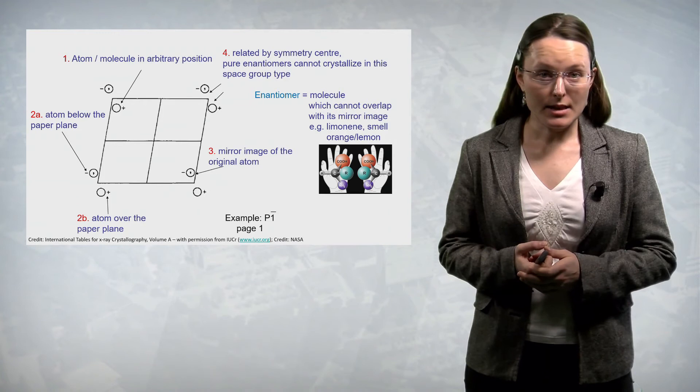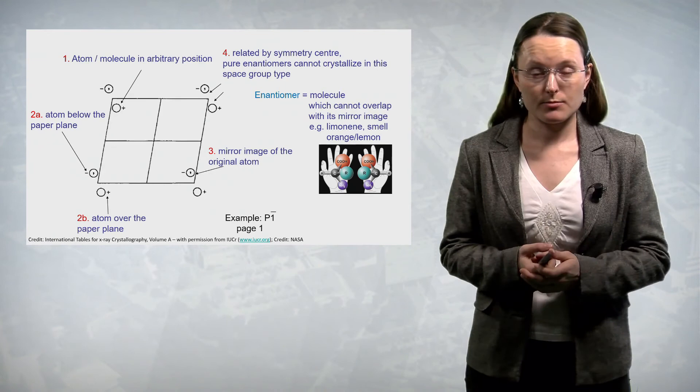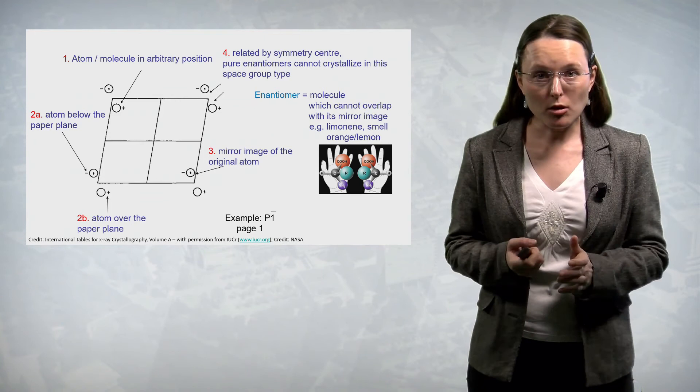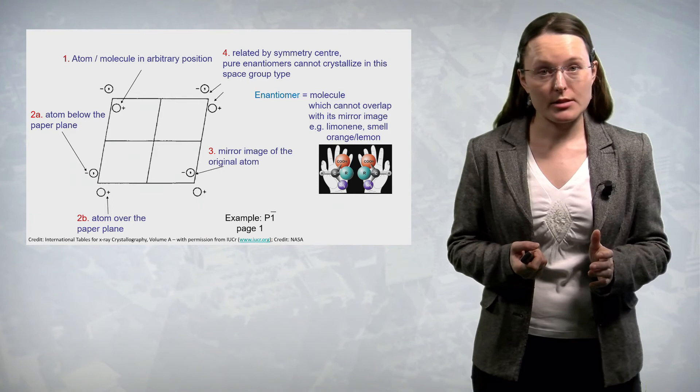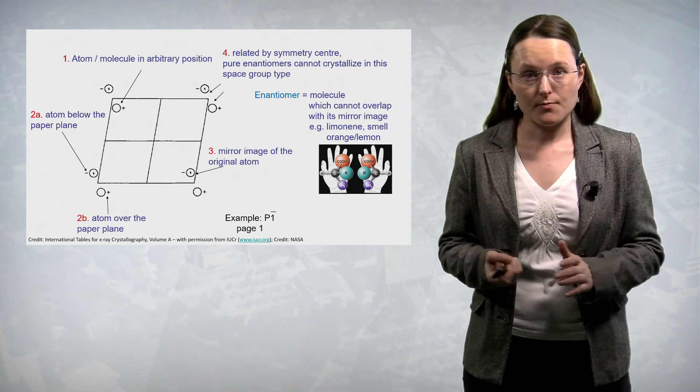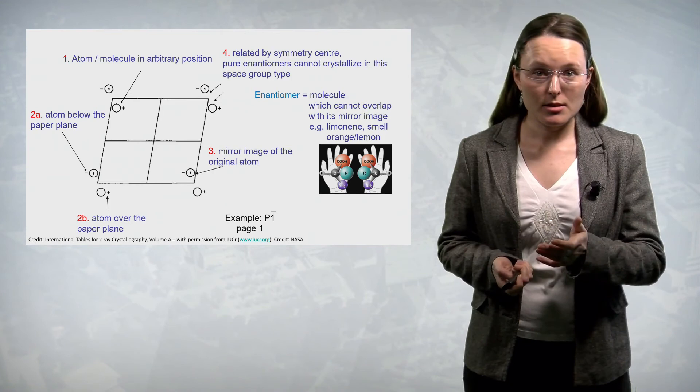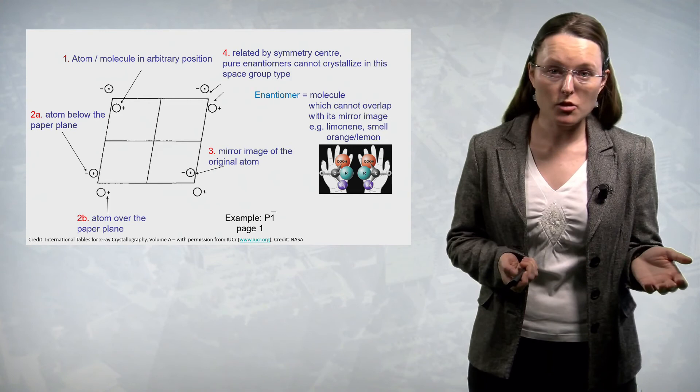As a result, pure enantiomers cannot crystallize in this space group type. As a reminder, an enantiomer is a molecule which cannot overlap with its mirror image, and different enantiomers of the same compound can have completely different properties. For instance, the ethereal oil limonene has a different smell depending on the enantiomer — one enantiomer smells of orange and the other of lemon.